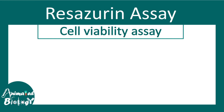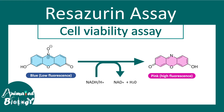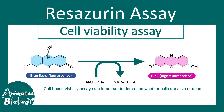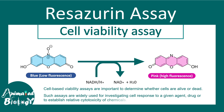In this video we'll talk about the resazurin assay, which is one of the cell viability assays. This resazurin assay is used to detect whether the cells are viable or dead. These kinds of assays are widely used to investigate cell responses towards a given agent or drug, and to understand the effect of cytotoxicity, or the harmful effect of a drug.